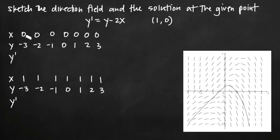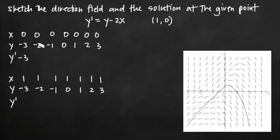Notice that we have the x value set to zero for all of these points. What we're doing is saying at the point (0, -3) the slope is something, then at the point (0, -2) the slope is something, and we're going to plot each of those slopes. For example, for the first point (0, -3) we plug in zero for x and negative three for y to get y prime. When we plug in negative three for y we get negative three minus two times zero, which is just negative three.